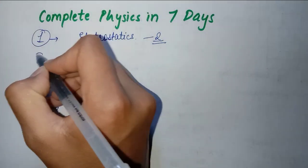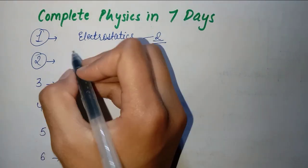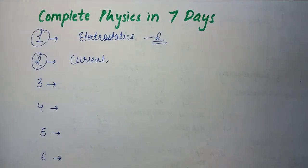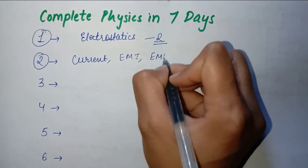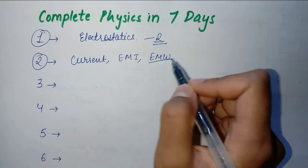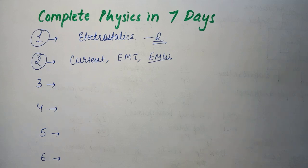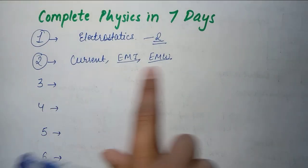After that, we will talk about what you will do on the second day. After you complete electrostatics, you have to complete current electricity which is the third chapter. And this is a little lengthy, so you can take this with EMI and EMW - electromagnetic induction and electromagnetic waves. This is a very small chapter. It will complete in two to three pages and within half an hour or one hour it will complete.